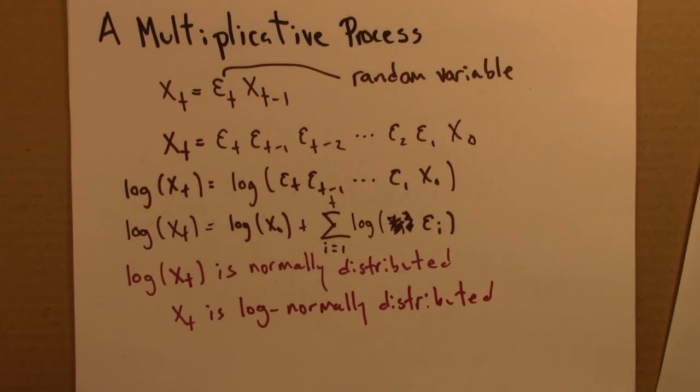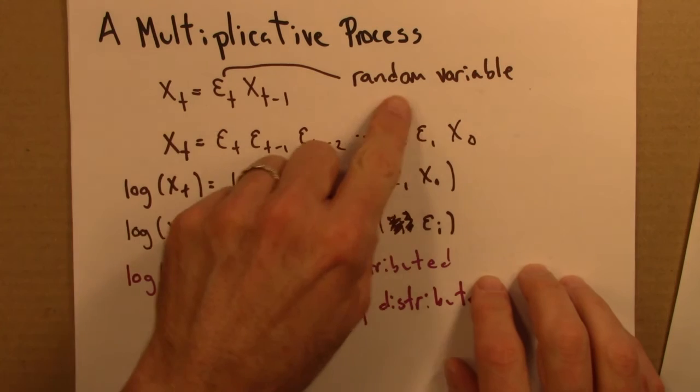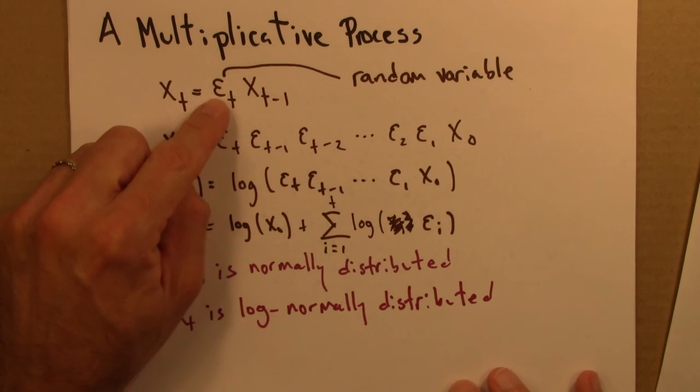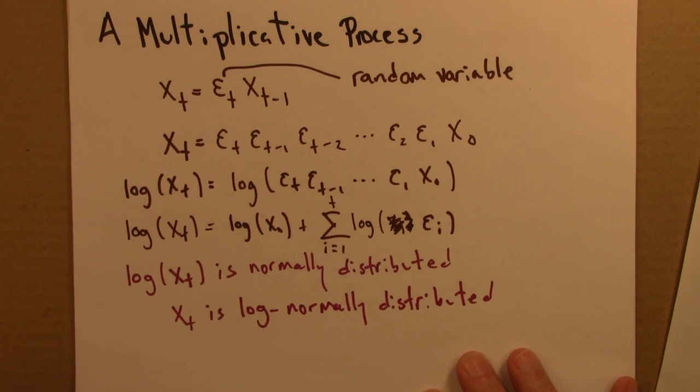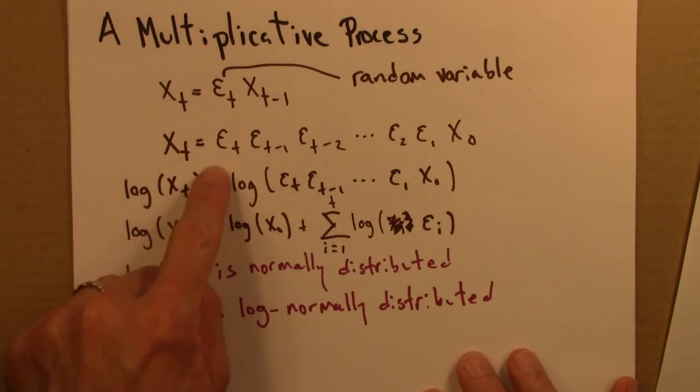So the conclusion we draw then is that xt is log normally distributed. So this is quite a general result. It doesn't rely on any strong assumptions about the nature of this random variable just that it's well behaved and not odd or pathological.